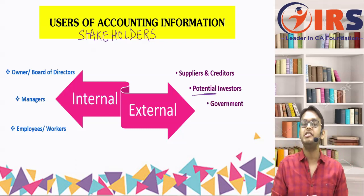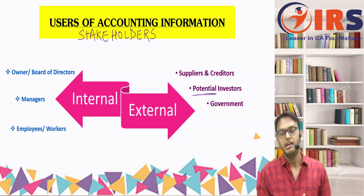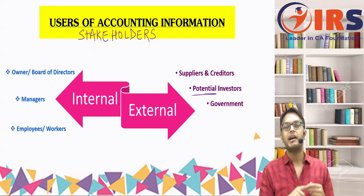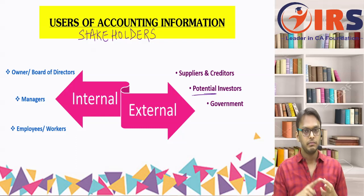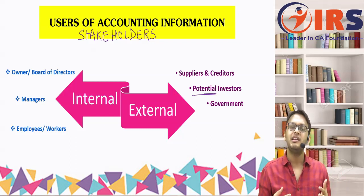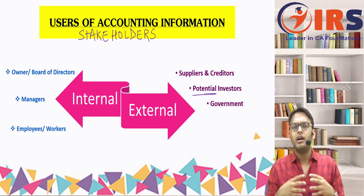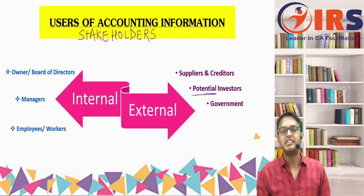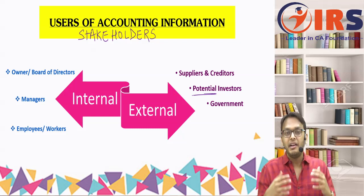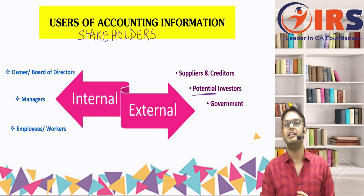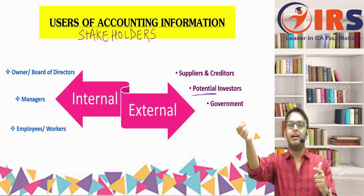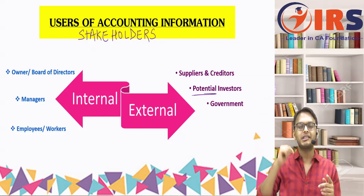The government is also an external user. The government is interested in knowing whether the company's business is legal, whether the organization complies with all applicable laws, and whether companies are paying taxes properly. Tax is paid on profit, and profit is determined from the profit and loss account — so the government monitors financial statements accordingly.